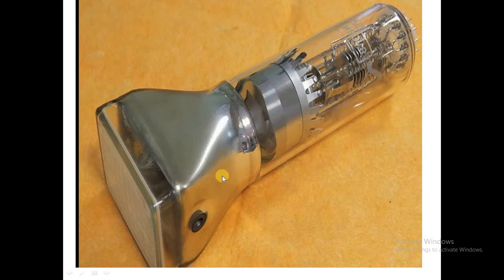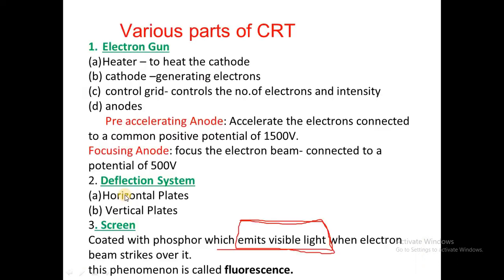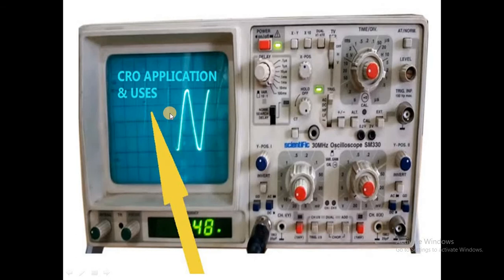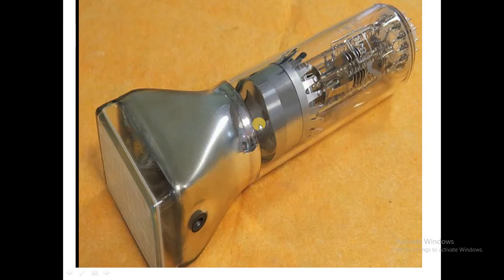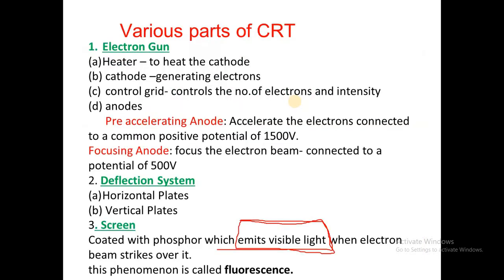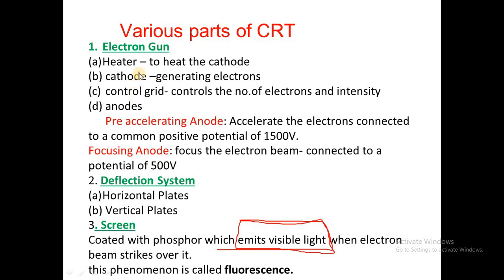The main heart of the CRO is only the CRT. Here is a CRT tube — if you open the CRO you can observe this type of CRT tube. This part is the screen visible to us. The various parts of the CRT are: electron gun, deflection system, screen, glass envelope, and base. The electron gun is very important — it is the heart of the CRT.